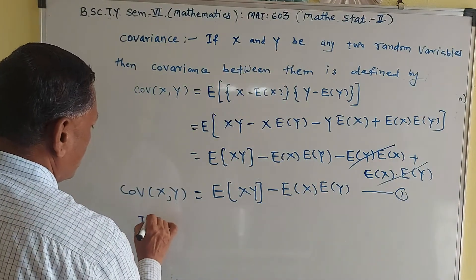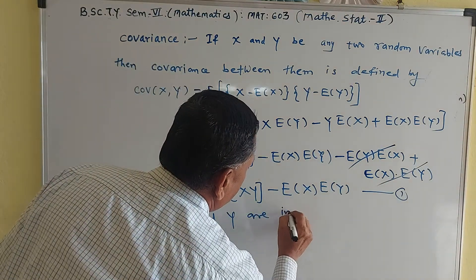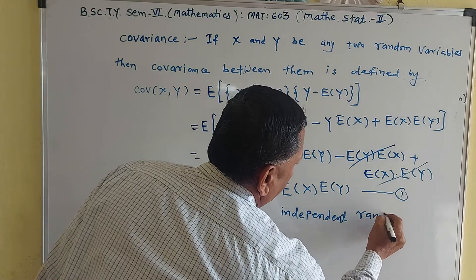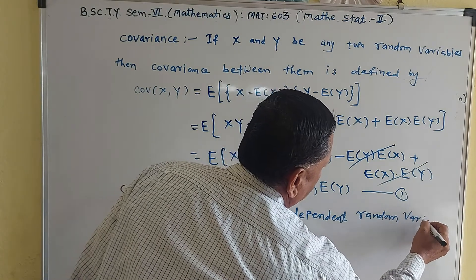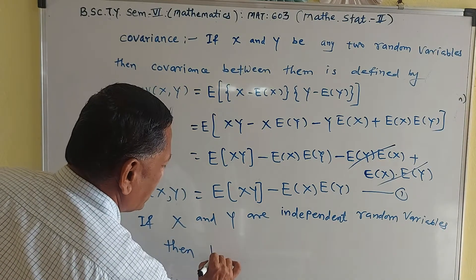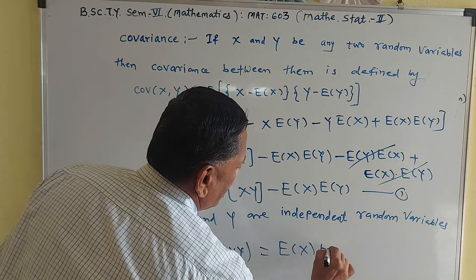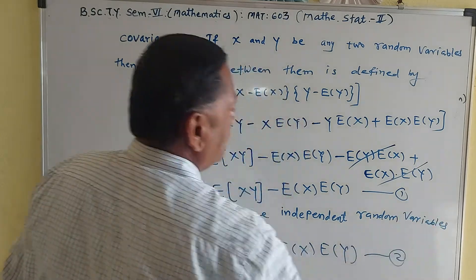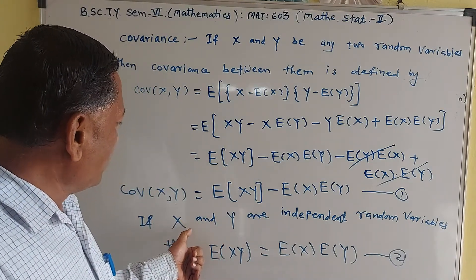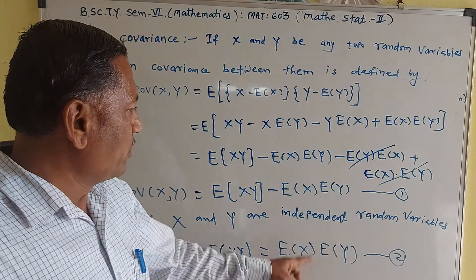If X and Y are independent random variables, then E[XY] = E[X] times E[Y]. This is a known theorem or property: if X and Y are independent random variables, then the expectation of their product equals the product of their expectations. Using this result in formula one: